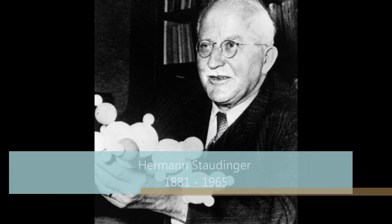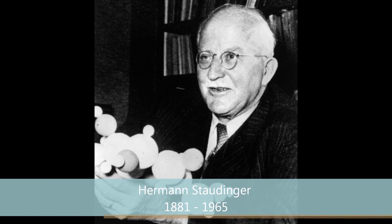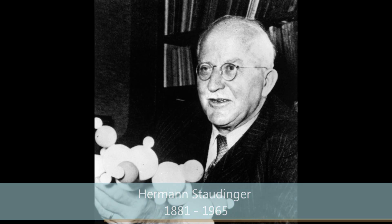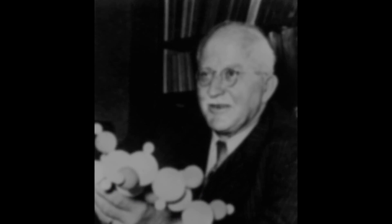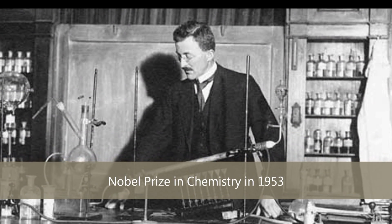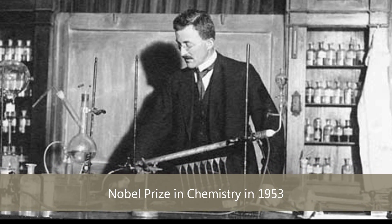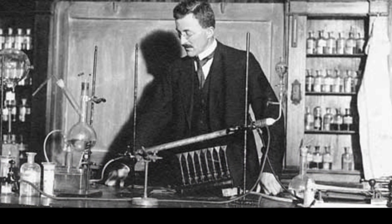When the idea of polymers was first hypothesised by a German scientist called Hermann Staudinger, he was mocked and ridiculed by scientists. Staudinger however went on to establish the first polymer journal in 1940 and to win the Nobel Prize in Chemistry in 1953 for his discoveries in the field of macromolecular chemistry.